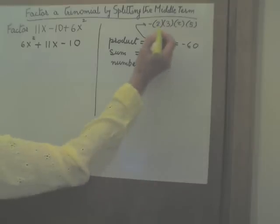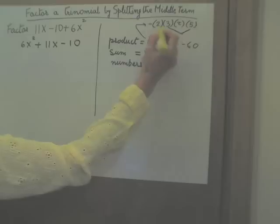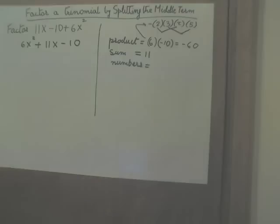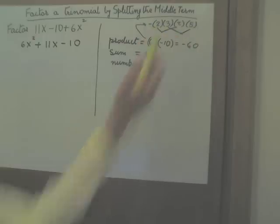Okay, let's see. What about 15 and negative 4? Will that work? Certainly the product of 15 and negative 4, this whole product, 15 times negative 4 gives us negative 60. So that's fine.